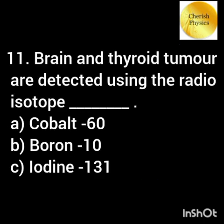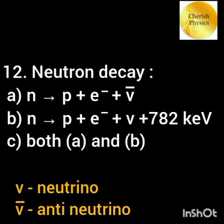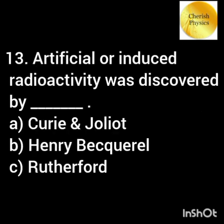Brain and thyroid tumors are detected using the radioisotope I-131. The process of neutron decay is beta decay. Artificial or induced radioactivity was discovered by Irène and Frédéric Joliot-Curie.